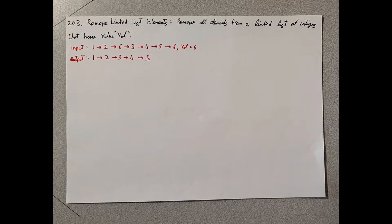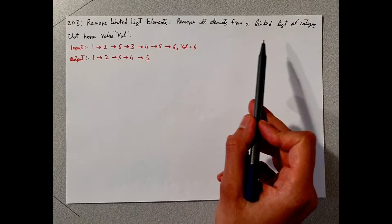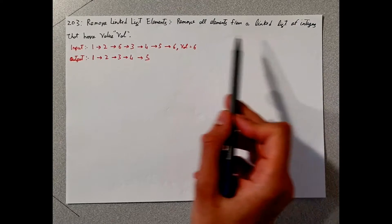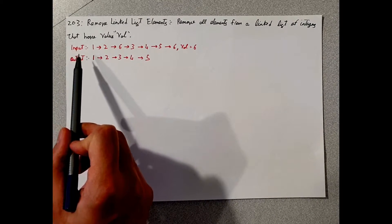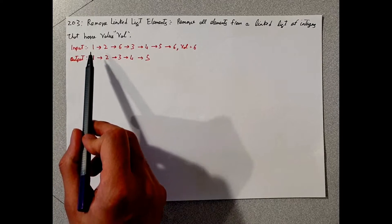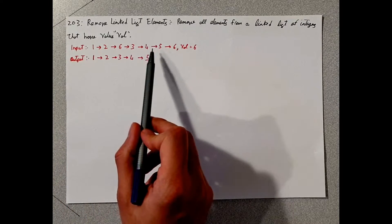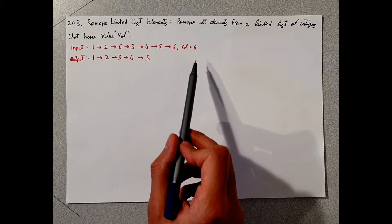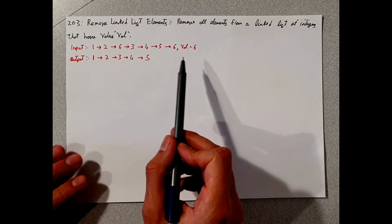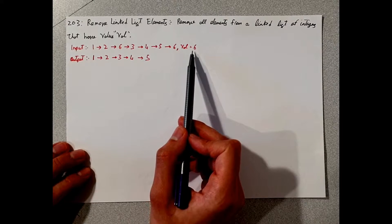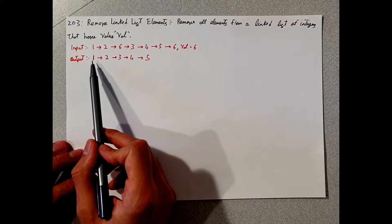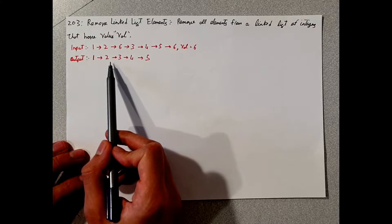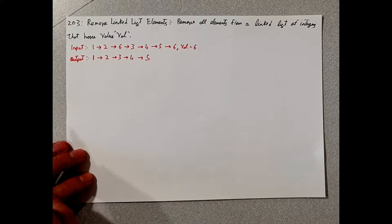The question says remove all elements from a linked list of integers that have value val. The input example given is 1, 2, 6, 3, 4, 5, 6, and the value is 6. So the question is basically asking to remove the number 6 from this list such that the output will be 1, 2, 3, 4, and then 5.